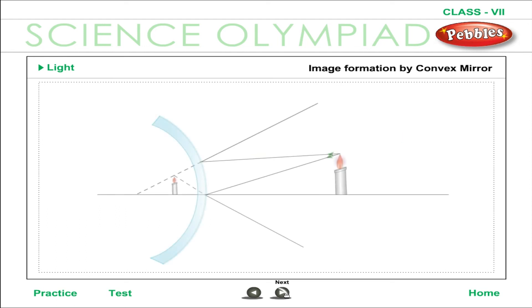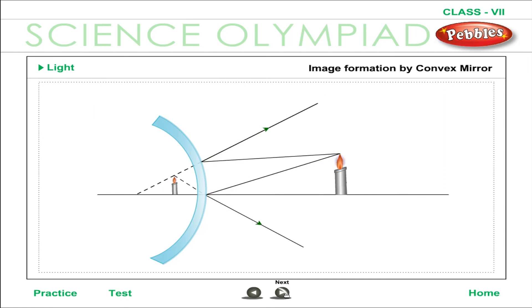Formation of images with a convex mirror: convex mirrors always produce virtual images of objects placed in front of them. The images are erect but smaller in size and formed behind the mirror. Because of this property, drivers of cars, trucks, and buses use convex mirrors to get a wide view of all the traffic coming from behind.